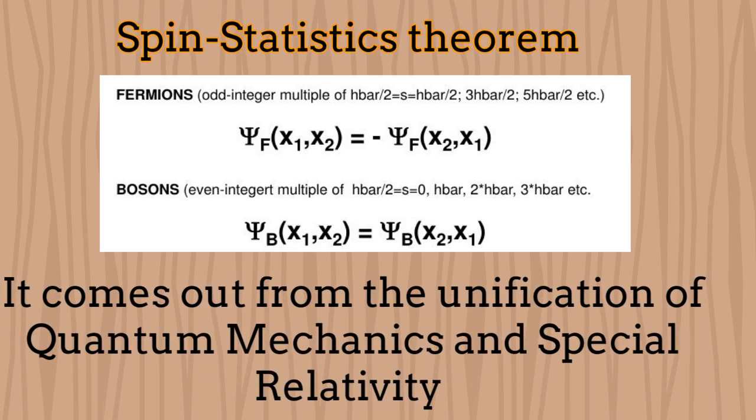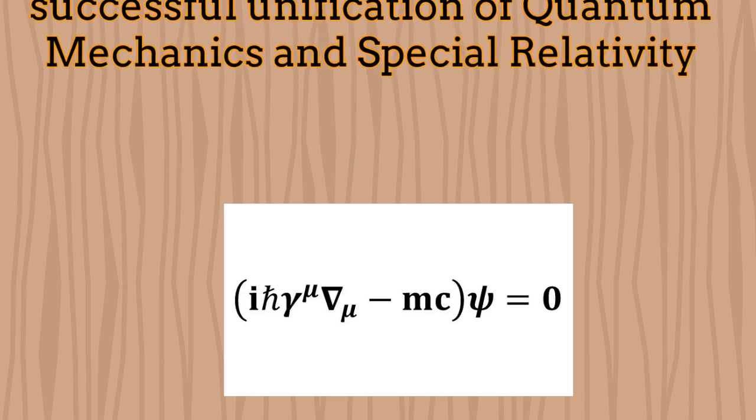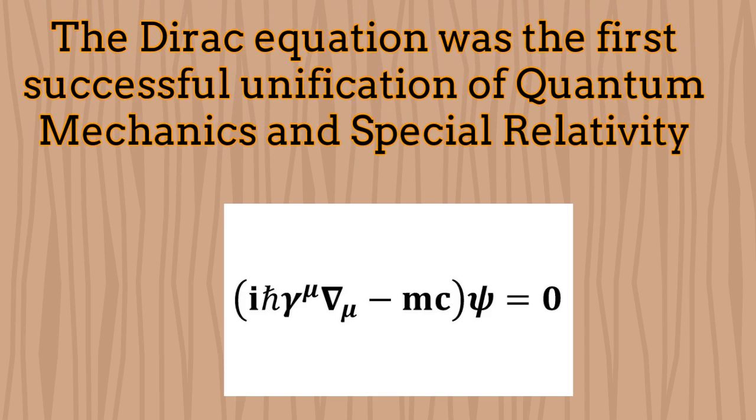The response to these questions comes from the famous spin statistics theorem. This theory is a natural consequence of the unification of special relativity and quantum mechanics. This unification was achieved for the first time by Paul Dirac in his famous equation.